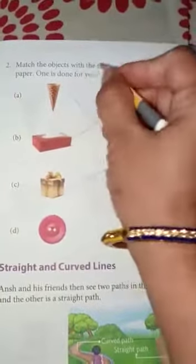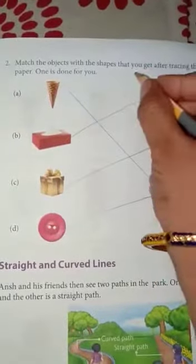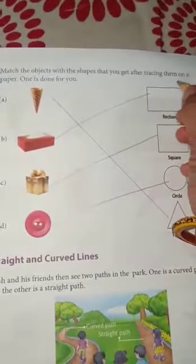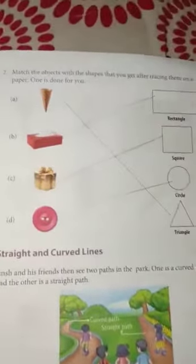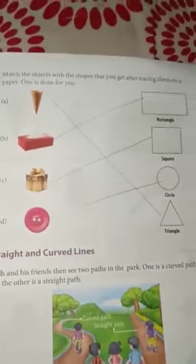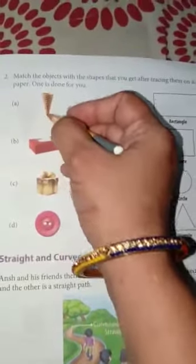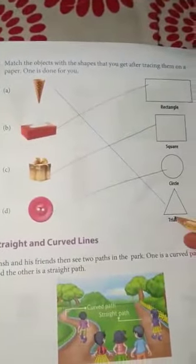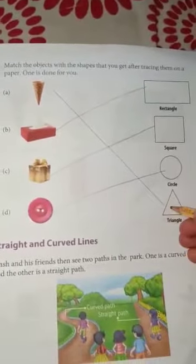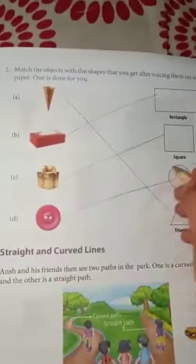Next, match the objects with the shapes that you get after tracing them on a paper. You will see which objects give which shape when you trace them. This will be a triangle after tracing. You will see which shape you get after tracing. That will also come after working.